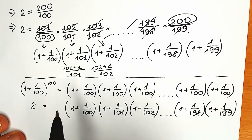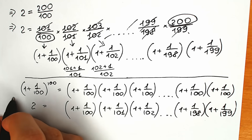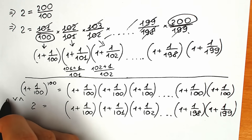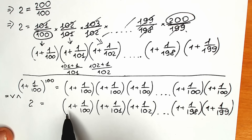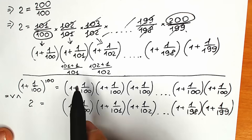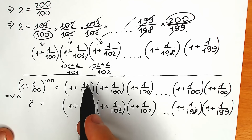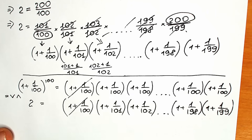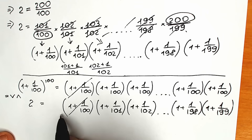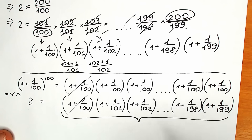Now we have two expressions. We have 100 parentheses on the top and 100 parentheses on the bottom. The very first parenthesis (1 + 1/100) is absolutely the same in both expressions, so we can mentally cancel it. We still have 100 expressions each, which allows us to compare them.